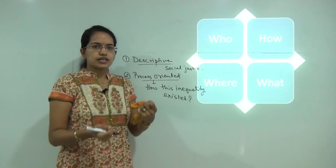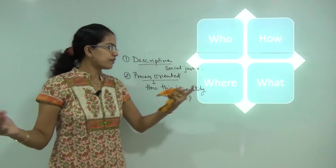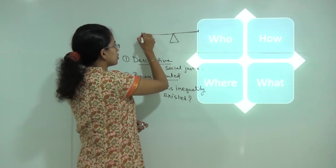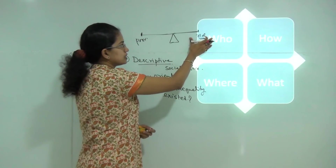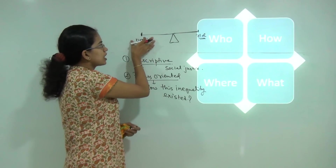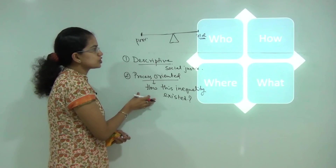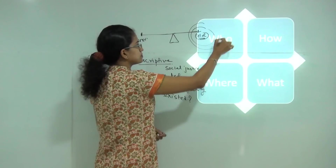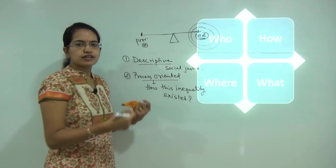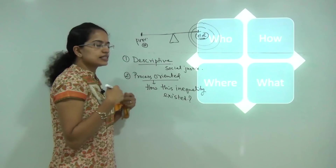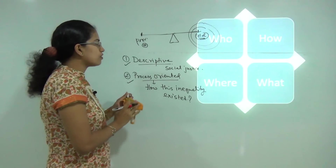The process-oriented approach does not only focus on people who are living in slums, but also on the rich. Using the analogy of a seesaw with the poor on one side and rich on the other — the descriptive approach identifies these segments and what facilities each is getting. Whereas the process-oriented approach asks why the richer segment is getting richer and the poor segment is getting poorer — it explains why and how inequality has arisen in society, rather than just describing the inequality itself.